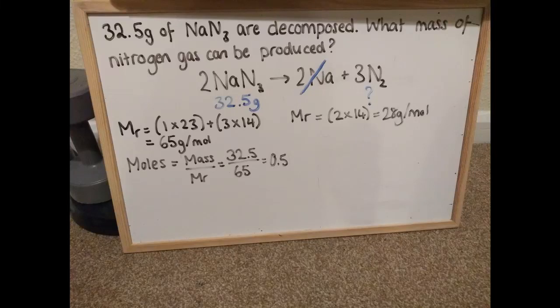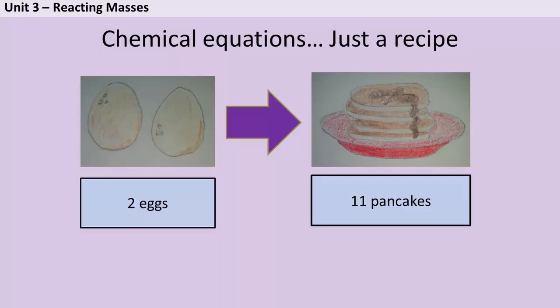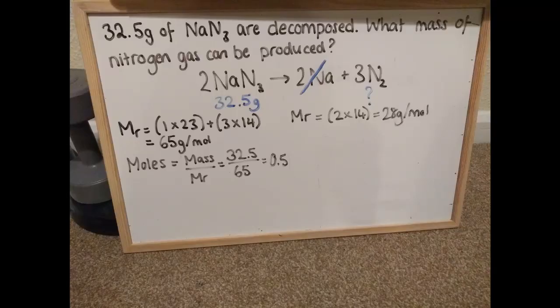Now I need to go back to my recipe and find out how much of the nitrogen that's going to make. In my example at the beginning, I knew that two eggs could be used to make 11 pancakes. What these coefficients in the balanced symbol equation tell me is that two moles of sodium azide can be used to make three moles of nitrogen. So in other words, I've got 50% more nitrogen. Now for lots of you that's probably quite a straightforward calculation that you could just do in your head. 50% more than 0.5 is going to be 0.75.